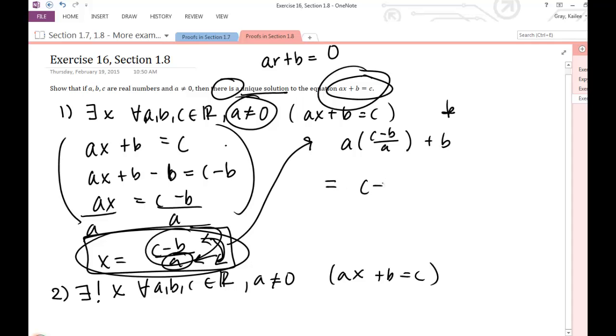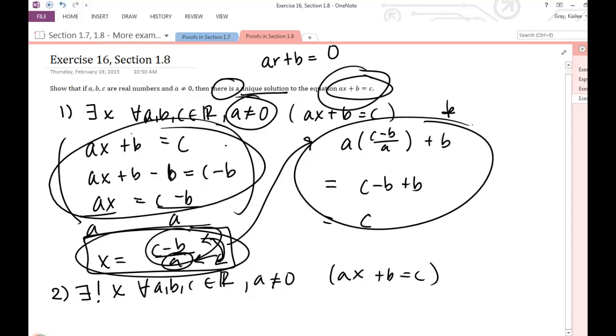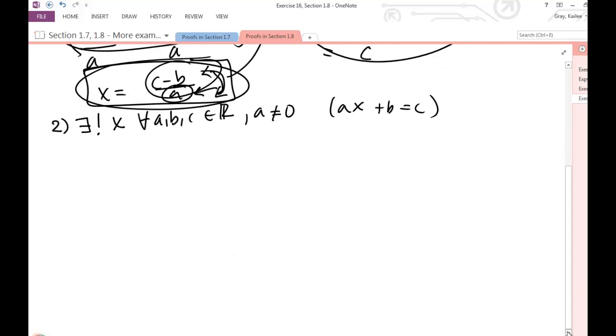c minus b plus b is equal to c, right, so it satisfies the equation, makes it a true equation. This is the part that we'll show—this is background work to figure out what we know about the solution. So that's our first part, our existence part. We've shown that it will exist.